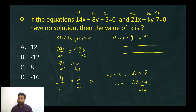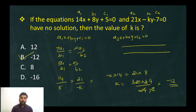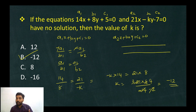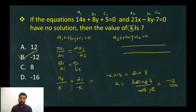Cancelling by 7: minus k equals 3 times 4, which is 12, so k equals minus 12. Option B is the answer. The concept is: if two straight lines have no solution, they are parallel, and the condition is a1 over b1 equals a2 over b2.